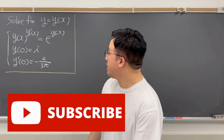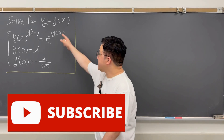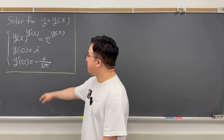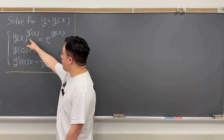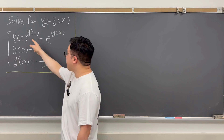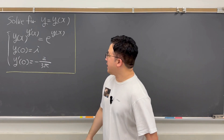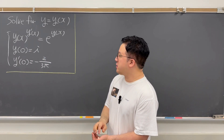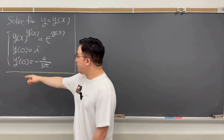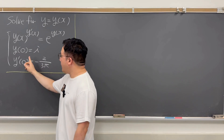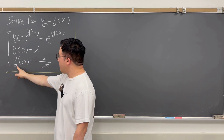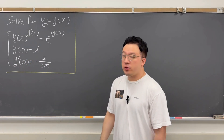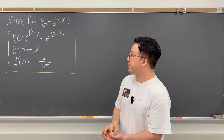The question is: solve for y = y(x), where y(x) to the power of y′(x) equals e to the power of y(x). We have two initial conditions: y(0) = i, and y′(0) = −2/(3π).